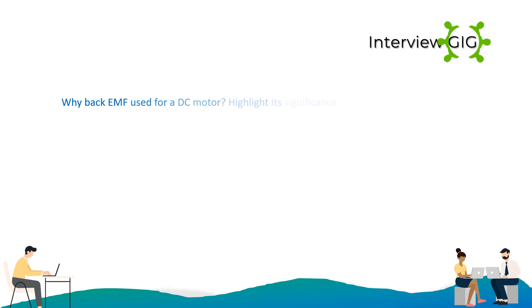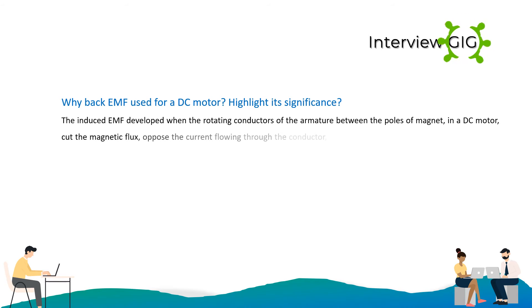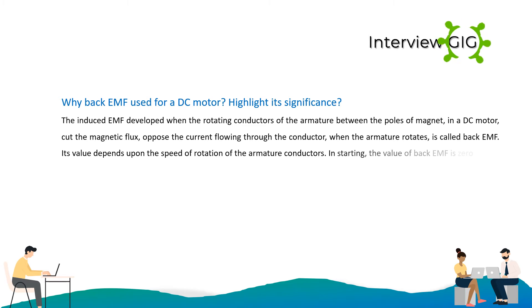Why is back EMF used for a DC motor? The induced EMF developed when the rotating conductors of the armature between the poles of a magnet in a DC motor cut the magnetic flux, opposing the current flowing through the conductor when the armature rotates, is called back EMF. Its value depends upon the speed of rotation of the armature conductors. At starting, the value of back EMF is zero.